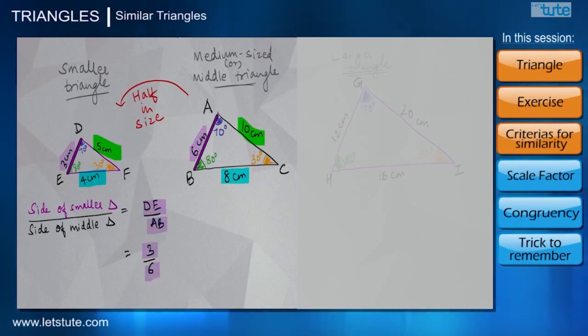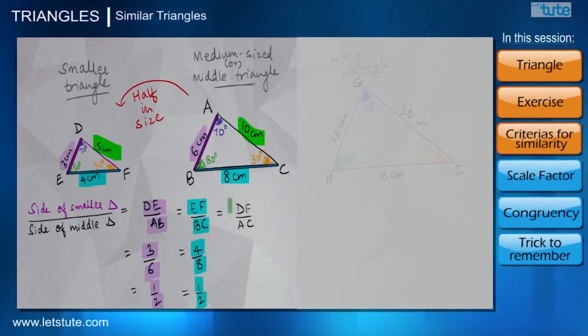So BC of the medium triangle corresponds to EF of the smaller triangle. So if we take the ratio 4 is to 8, again we will get 1 upon 2. Similarly, DF upon AC will give us 5 upon 10, which is again 1 upon 2.